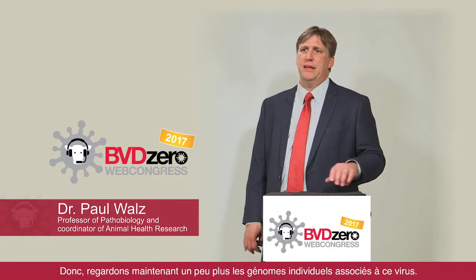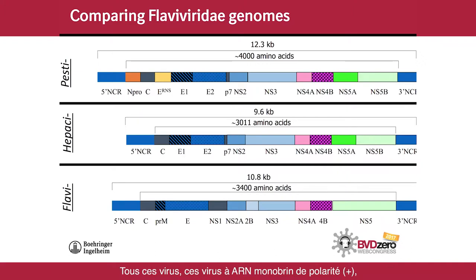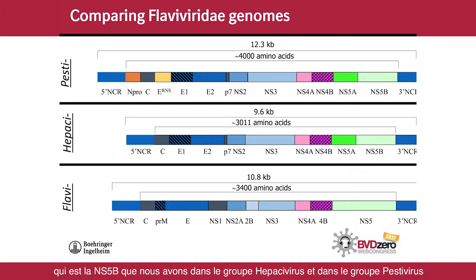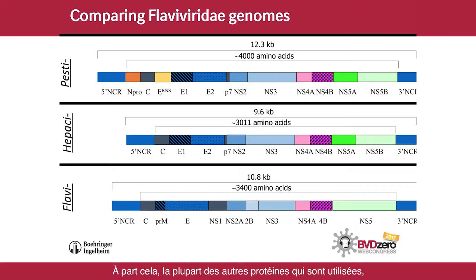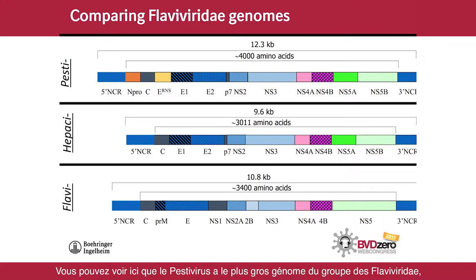Let's look at the individual genomes. On this slide you'll see three major groups: the Pestivirus group on top, the Hepacivirus group in the middle, and the Flavivirus group on the bottom. All of these single-stranded positive-sense RNA viruses really only need two structures to survive: a capsid, which provides protection, and an RNA-dependent RNA polymerase — the NS5B in the Hepacivirus and Pestivirus groups, and NS5 in the Flavivirus group. Most other proteins are used for cell surface receptor recognition, proteases, cleavage enzymes, or replication assistance. The Pestivirus has the largest genome in the Flaviviridae group, over 12 kilobases in length, translating over 4,000 amino acids.